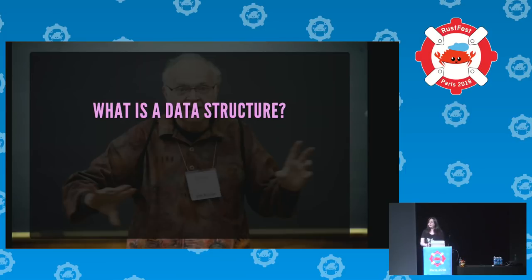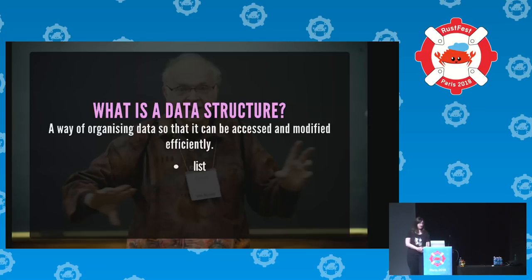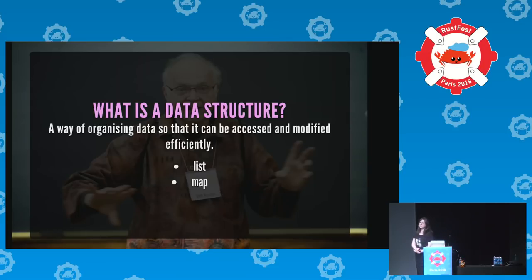So let's get started. What is a data structure? Here's the definition from Google: a way of organizing data so that it can be accessed and modified efficiently. Which is a fancy way of saying a list, or a map, or a key-value store, or a set, and various other things like graphs and matrices.